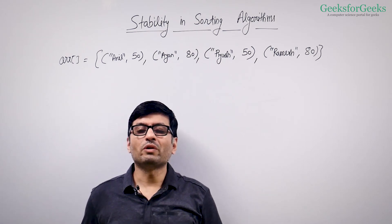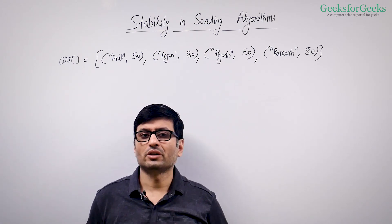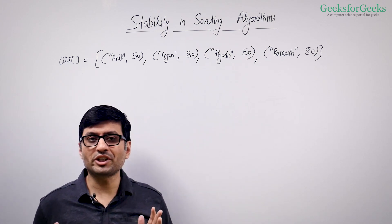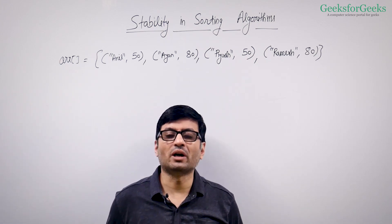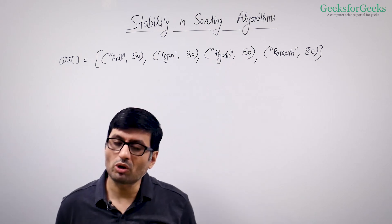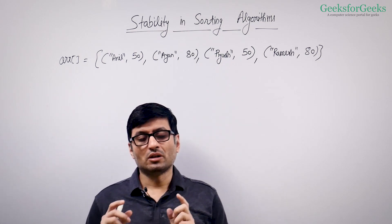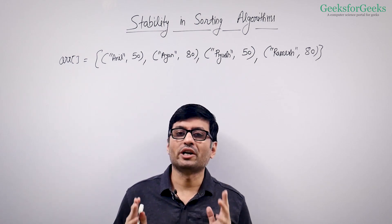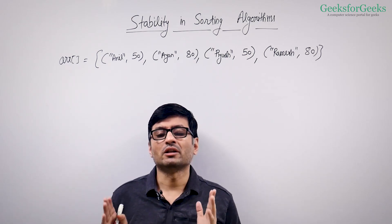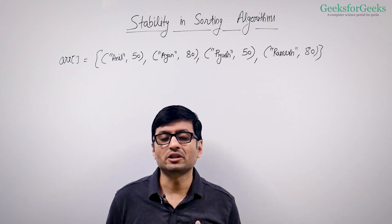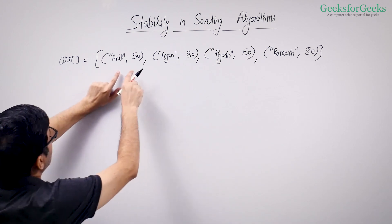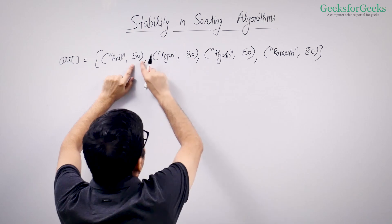We want to sort this array in increasing order of their marks. In the sorted array, we want to make sure that if two students have the same marks, they appear alphabetically in our output. This property is called stability. What it means is: if two items have the same value, they should appear in the same order as they appeared in the original array. Sorting by marks, we notice the marks are 80, 50, 80, 50, 80.